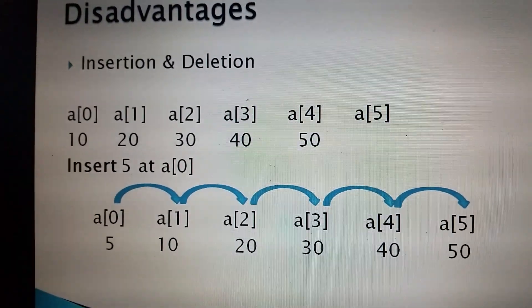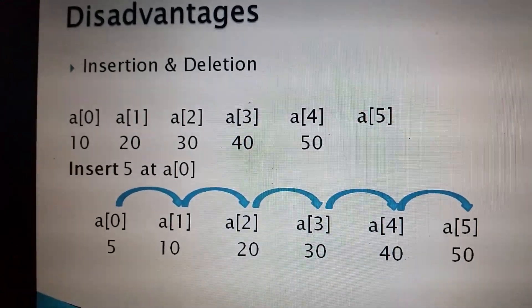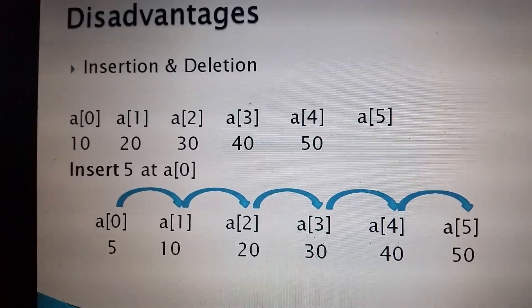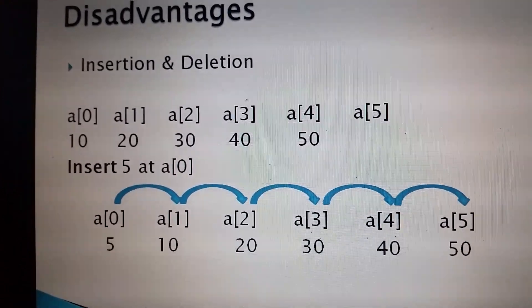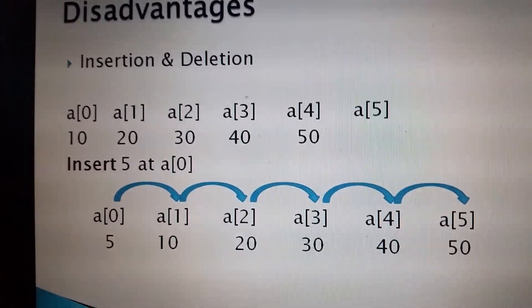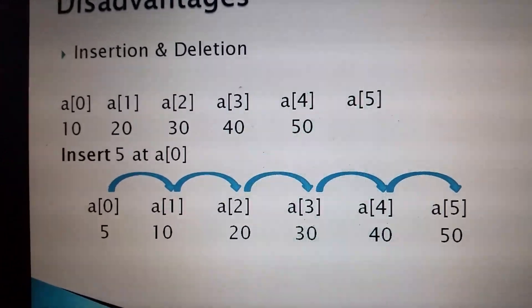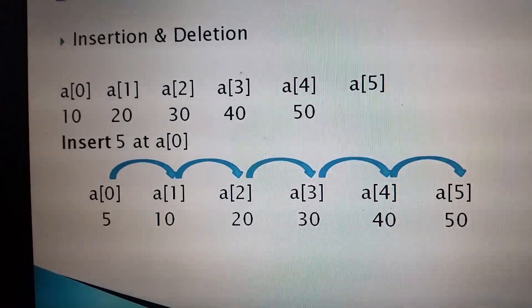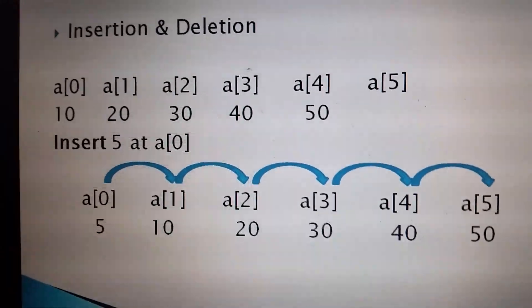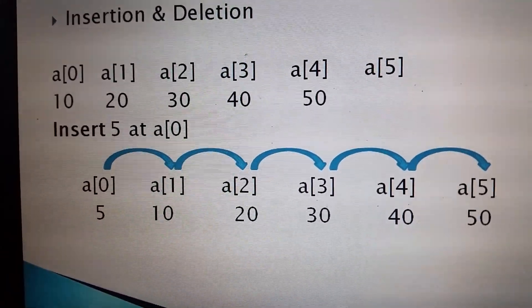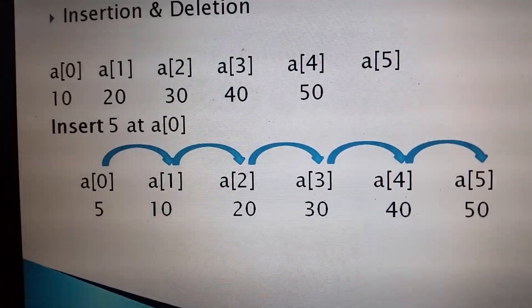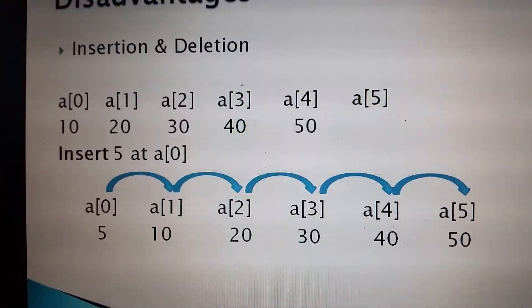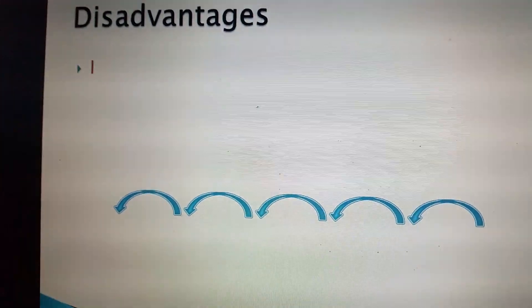The disadvantages in insertion and deletion. If we have an array of 5 with values 10, 20, 30, 40, 50, when we insert 5 at array index 0, it will insert 5, then we put 10, 20, 30, 40, and 50. That is the insertion disadvantage of an array.